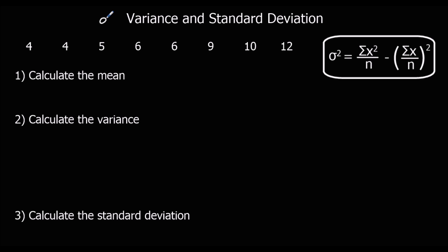For variance we use the symbol little sigma squared, and for standard deviation it's just little sigma. We're going to start with working out the mean and then move on to the variance and standard deviation.